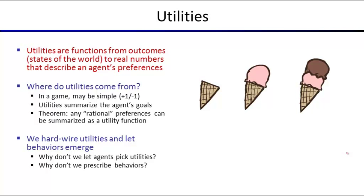In a game it's simple: winning is plus one, losing is minus one, a tie is zero. For real-world outcomes, it's much harder. There is a theorem that says any rational preferences can be summarized as a utility function. This means that for any rational person, we can associate a number with every outcome reflecting how much they prefer it. That's the utility, and then running expectimax for that person prescribes their rational behavior. Specifying utilities is often easier than specifying a whole behavior, because behavior depends on context — where ghosts are, where food pellets are — whereas a utility function can be simpler.